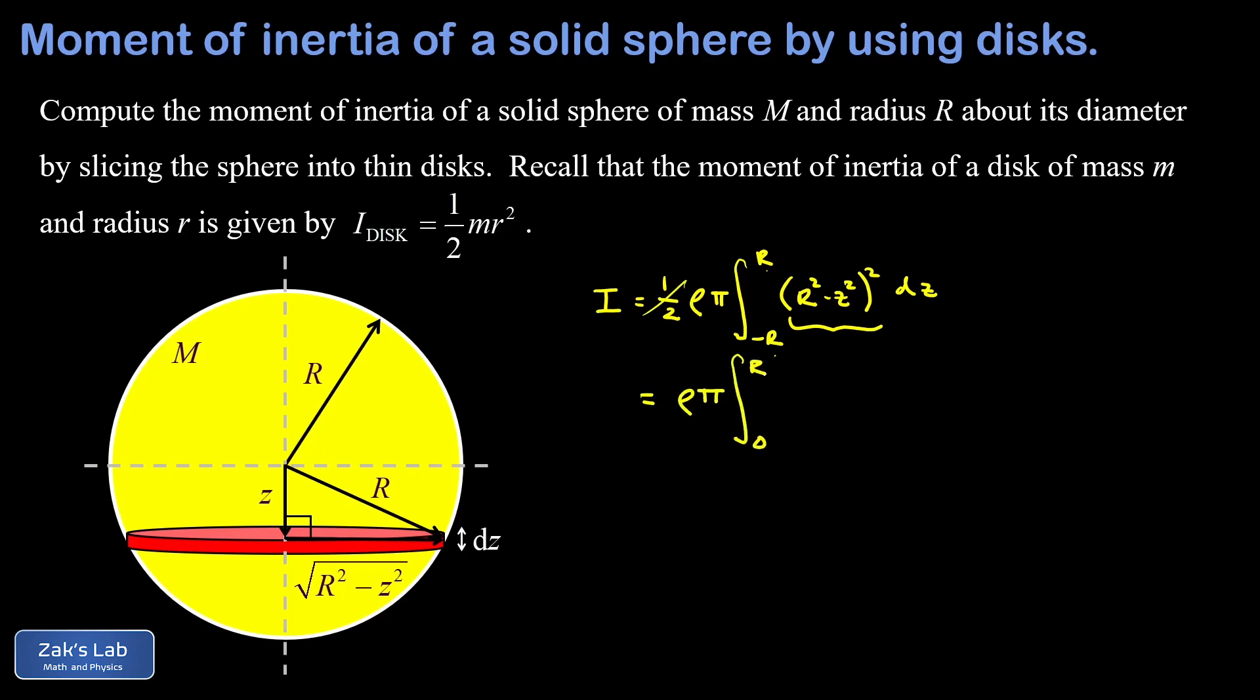Integral from zero to r. And then I want to expand this squared binomial. So I end up with r to the fourth. I end up with a cross term of negative two r squared z squared. And then finally I have a z to the fourth. Now we just have to use the power rule to compute each of these antiderivatives.